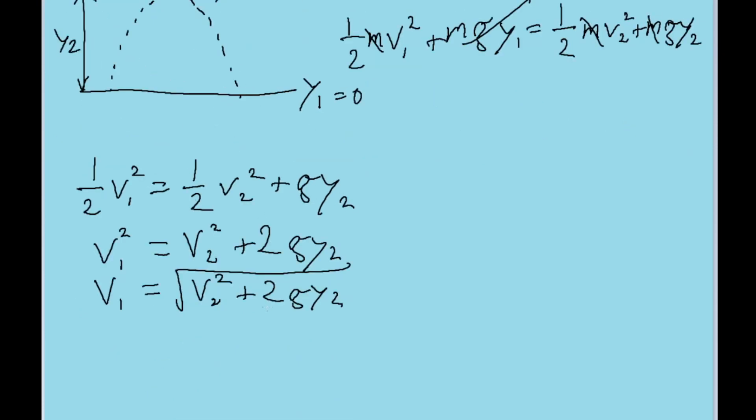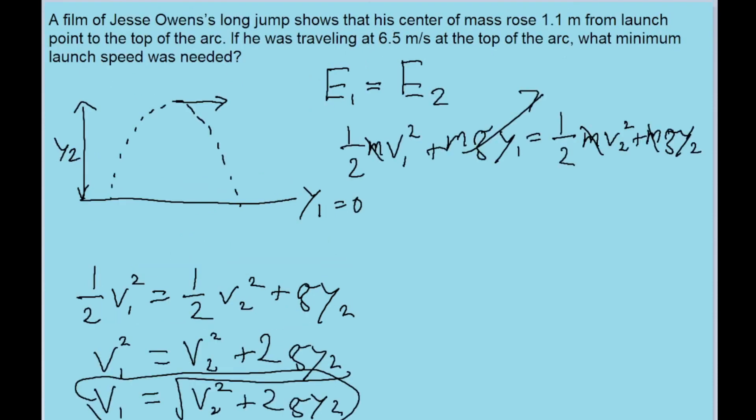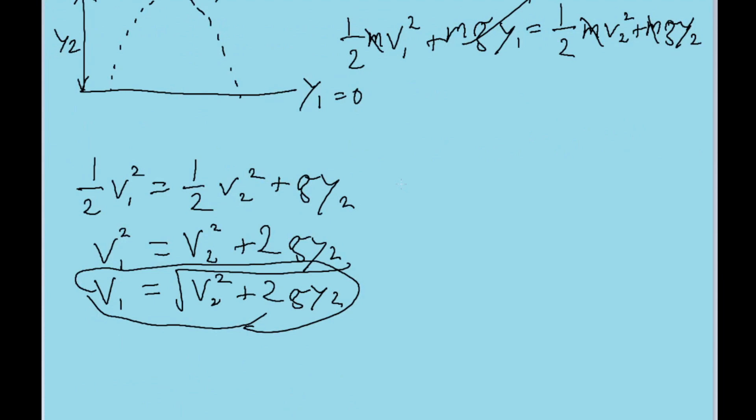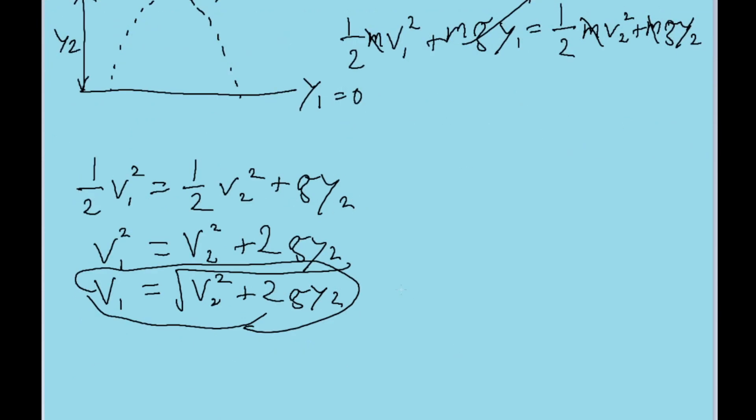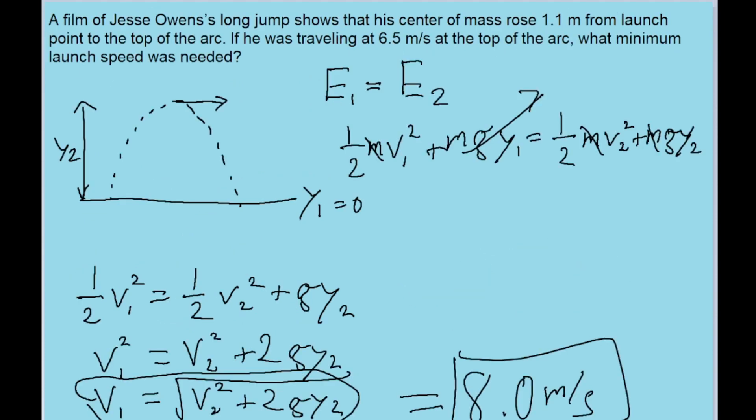This final equation is the equation we'll want to use to find the initial launch speed. So we'll use 6.5 meters per second for V2, 9.8 meters per second squared for G, and for Y2 we'll use 1.1 meters. If we plug this all into our calculator, we find an initial speed of about 8.0 meters per second. So that is approximately the launch speed of Jesse Owens before undertaking this motion.